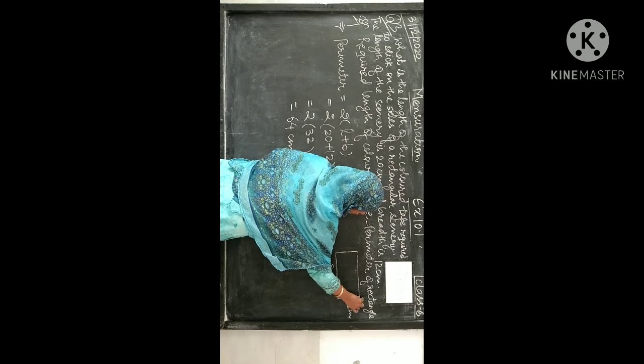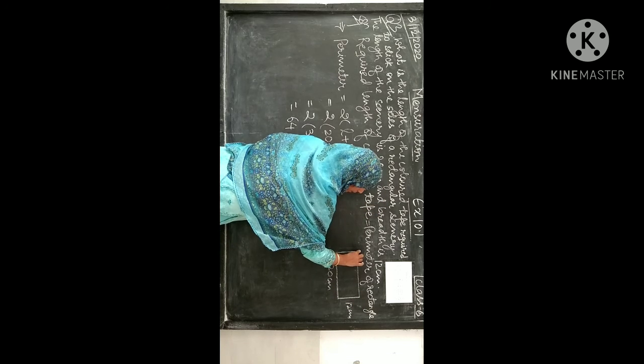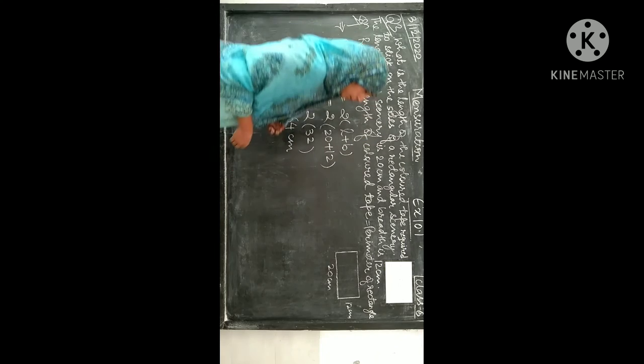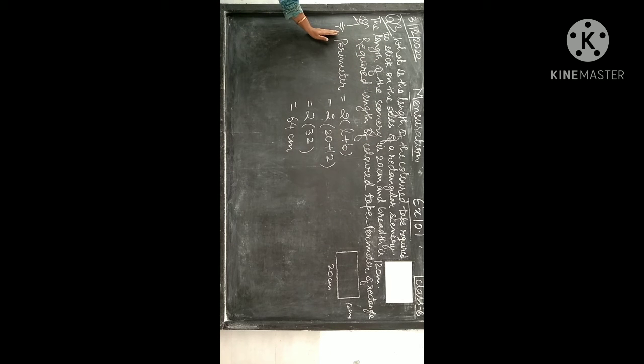20 plus 12 is 32. 32 into 2 is 64. To aap ko kitna total tape chahiye is scenery ke 4 sides lagane ke liye? 64 cm.